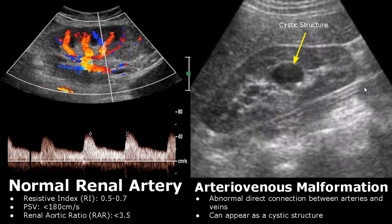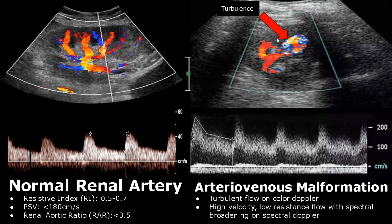Renal arteriovenous malformation is an abnormal direct connection between arteries and veins. Without Doppler, it will look like a cystic structure in the kidney — a non-specific appearance. However, on color Doppler, we will see turbulent flow inside the cystic structure with mixing of colors. On spectral Doppler, high velocity flow is noted. You can see peak systolic velocity crossing 200 centimeters per second. There is also spectral broadening due to turbulent flow.